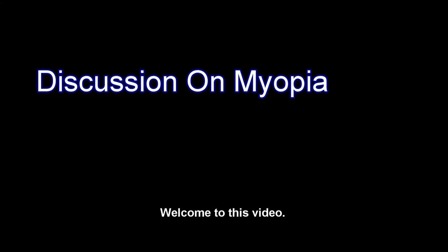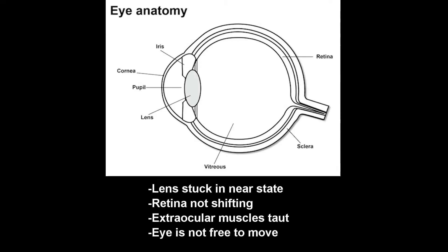Welcome to this video, a discussion on myopia. So what is myopia? The problem is the lens is stuck in a near state. The retina is not shifting. The extraocular muscles are taut and the eyes are not free to move in a normal fashion.